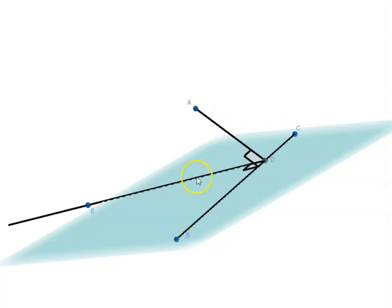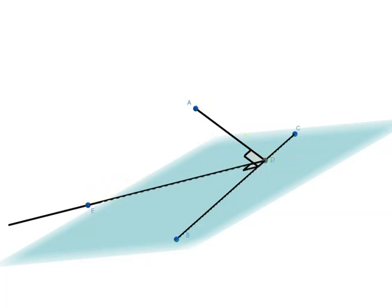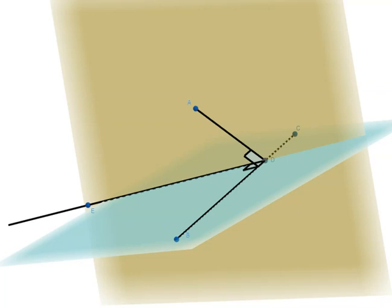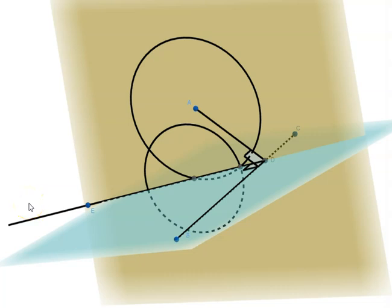Now we draw a line perpendicular from A to DE. Again we have to do it in the plane in which all three points are present — that is, where AD and DE are. So let us draw that plane first, and then we apply the construction again using circles and intersections. We take the point of intersection of this line with DE and call it F.